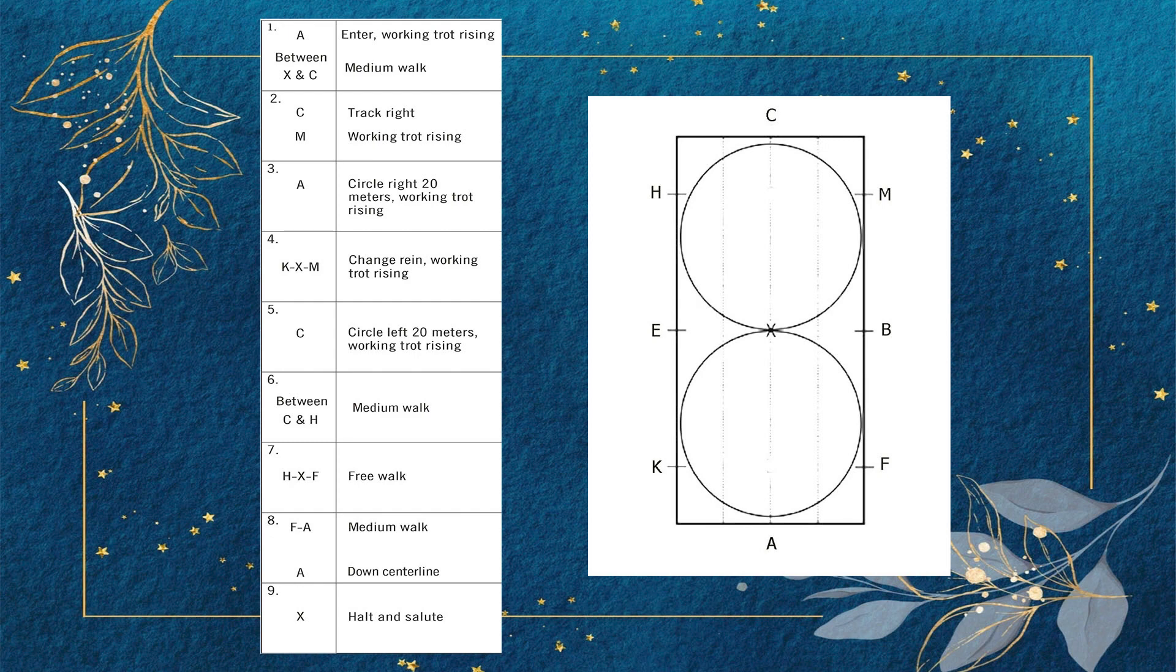HXF: Free walk. F to A: Medium walk. A: Down the center line. X: Halt and salute.